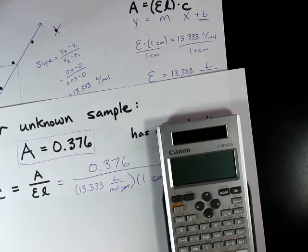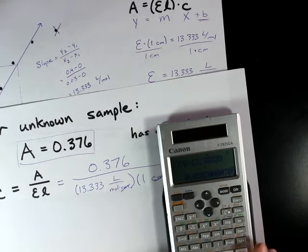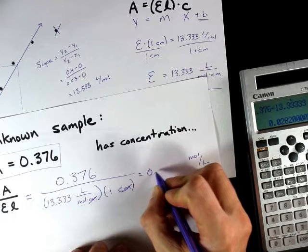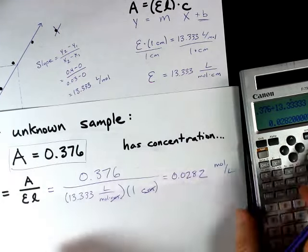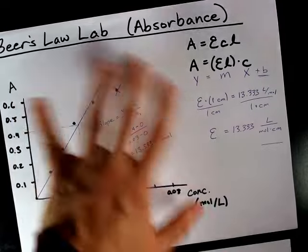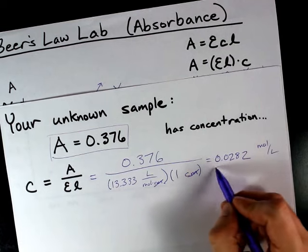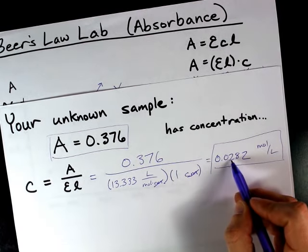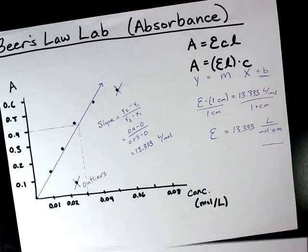Okay, 0.376 divided by 13.33333 gives me 0.0282. Now, I don't know how many sig figs you have. That will depend on how many sig figs you use throughout your experiment. But, a concentration of 0.028 moles per liter for me gives an absorbance of 0.376.